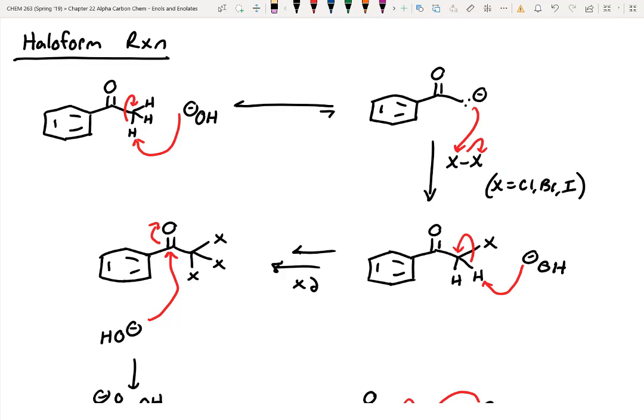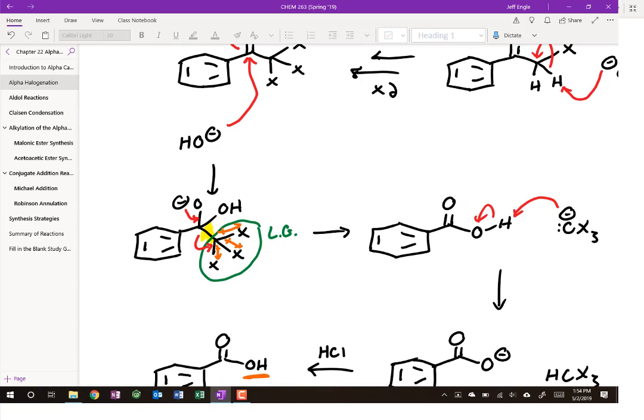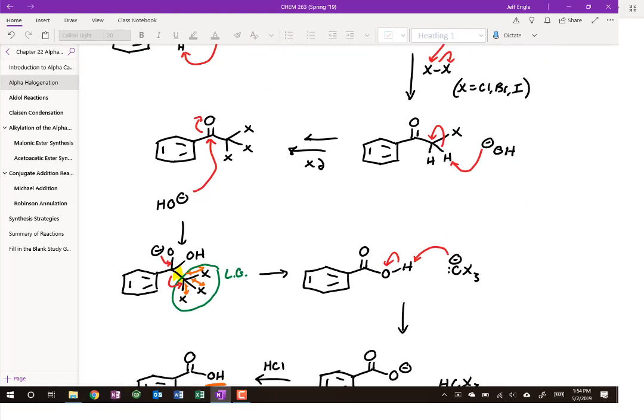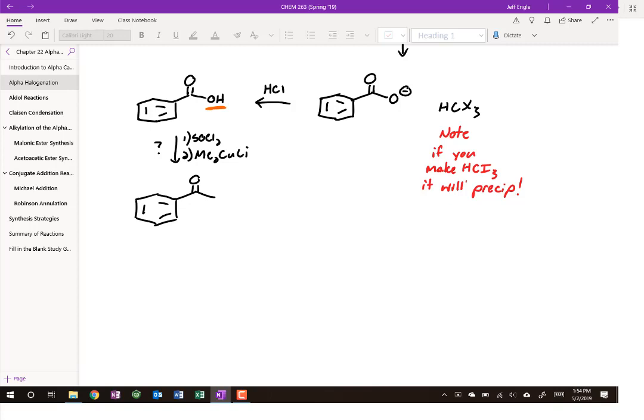Just for fun, how could we go from our carboxylic acid back to our starting material? It's not going to be in one step. How can we change this into a good leaving group? We could use SOCl2. We could turn that into a chlorine, and then how could we get the methyl group to go on? We would have to use the Gilman reagent. We could add that methyl group back in.